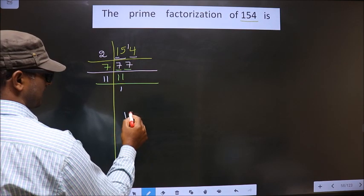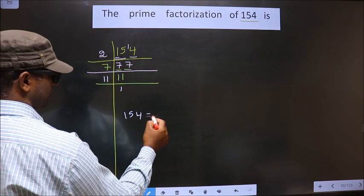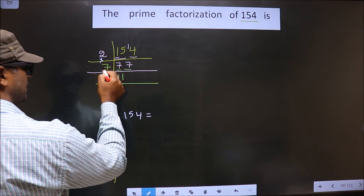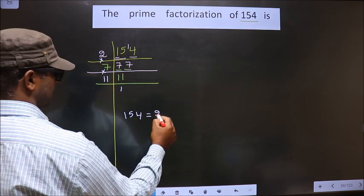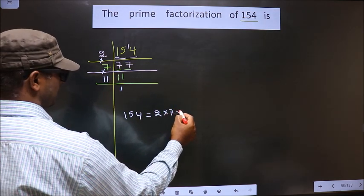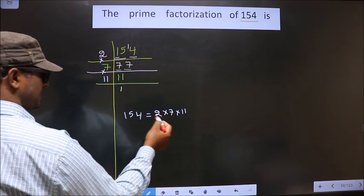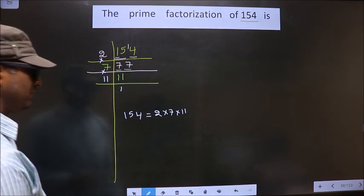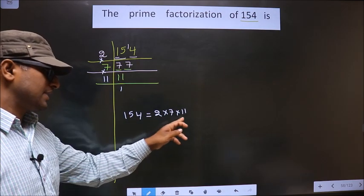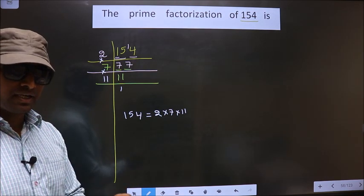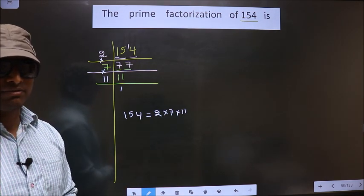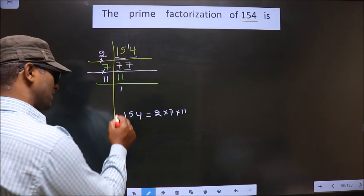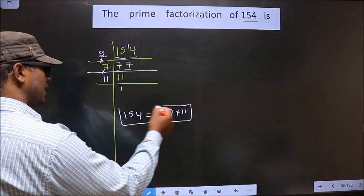So prime factorization of 154 is, you put the into symbol between them. That is 2 into 7 into 11. So this is the prime factorization of 154. This is also called the product of prime numbers of 154. So this is our answer.